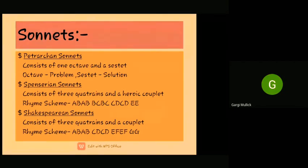There are broadly three styles of sonnets, which are Petrarchan, Spenserian, and Shakespearean. The Petrarchan sonnets are those which were common in that era. They consist of an octave — eight lines — and a sestet, which is six lines.